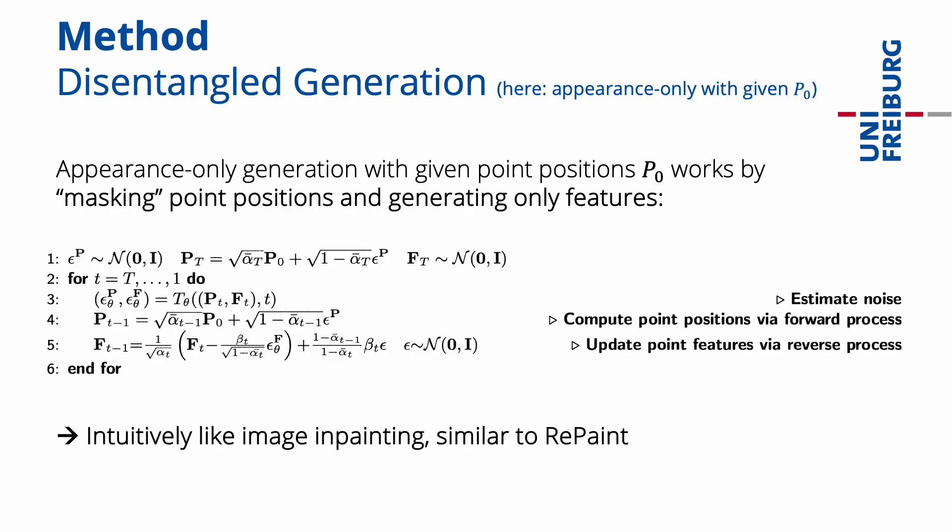Disentangled generation, here described for appearance-only generation with given point positions P0, works by masking the point positions and generating only the point features. In each diffusion step, the point positions are computed via the forward diffusion process and only the features are updated using the estimated noise and the reverse diffusion process. Intuitively, this can be seen like image inpainting with a formulation similar to RePaint. Instead of masking parts of the image, we mask one modality of our representation, namely the point positions or the point features.